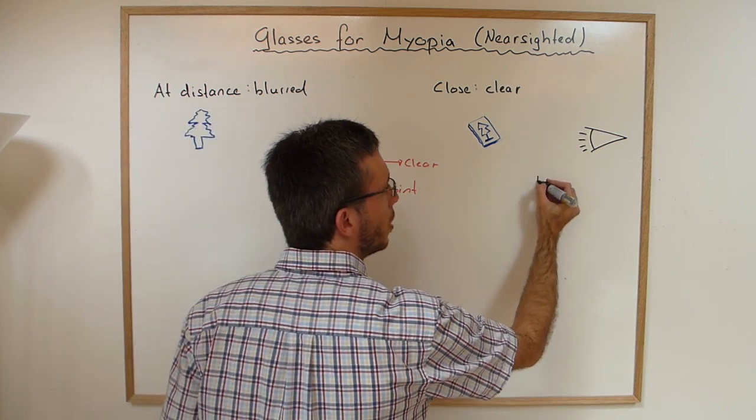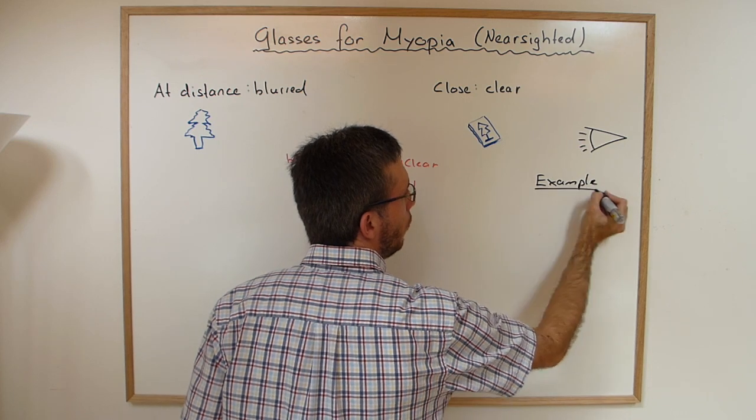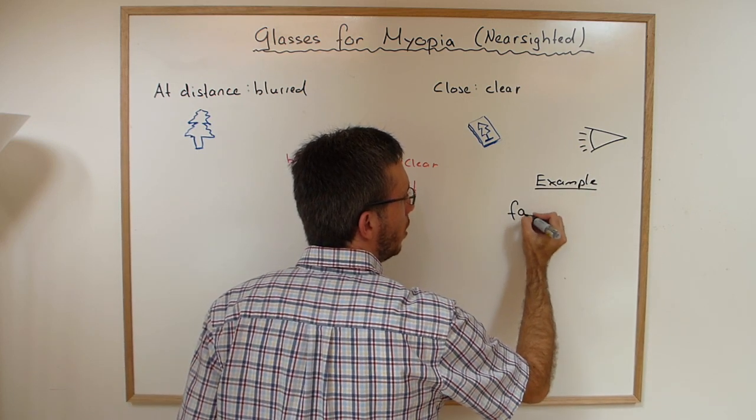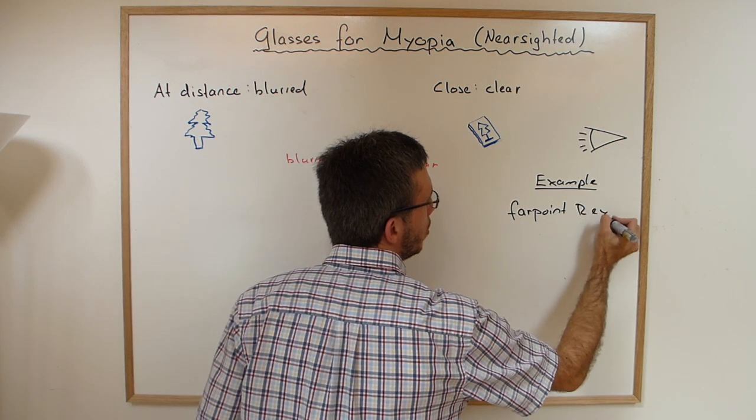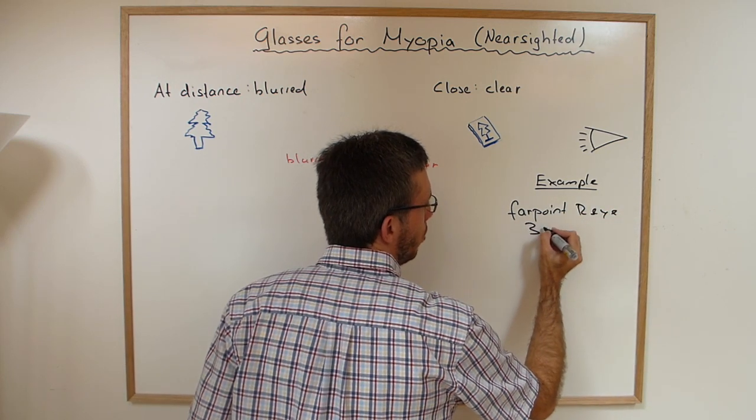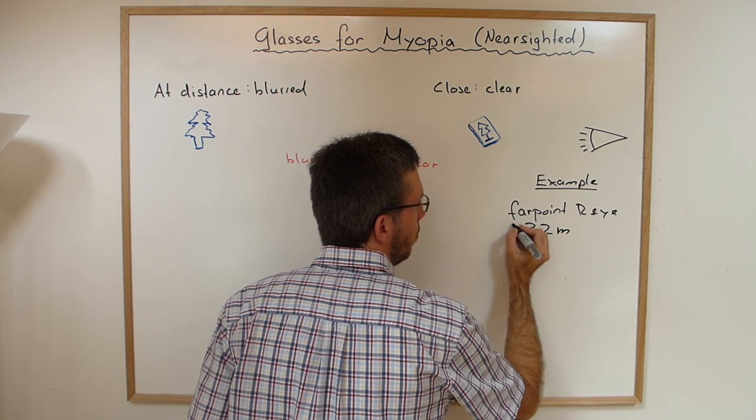For example, in my case, my far point of my right eye is about 32 centimeters or 0.32 meters.